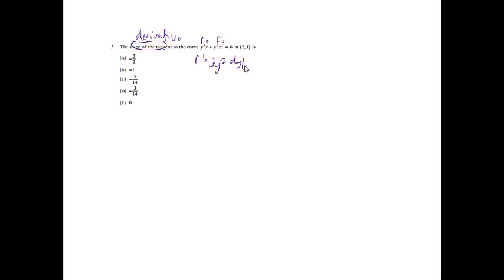Problem 3: the slope of the tangent line to the curve y³x + y²x² = 6 at (2, 1) is? Slope of a tangent is the derivative, so I'm going to take the derivative of this equation. I notice that twice I'm going to have to use the product rule. f' will be 3y² dy/dx — whenever we take the derivative of y, we include dy/dx — and g' will be 1. On the second term, f' will be 2y dy/dx and g' will be 2x.